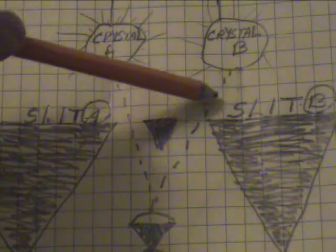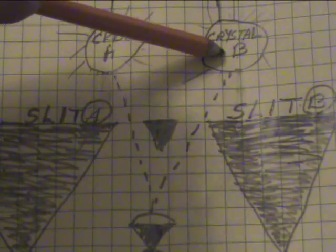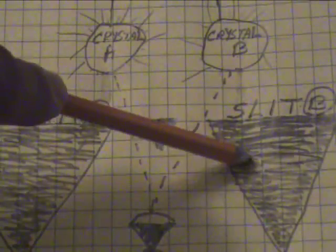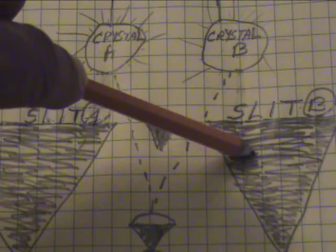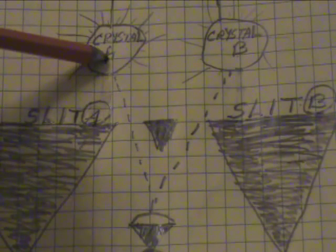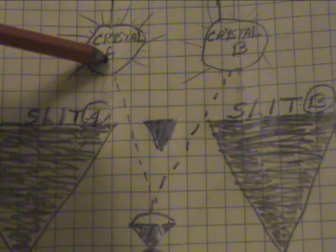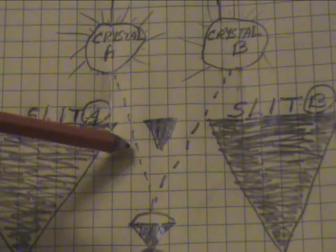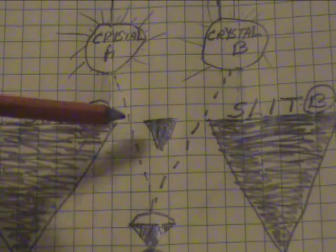If it comes this way, it is going to hit crystal B and it implies it came from slit B. If it hits crystal A, that means that it came from slit A right here.